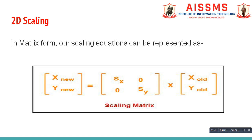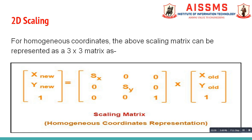In matrix form, our scaling equations can be represented as follows, and it is known as the scaling matrix. For homogeneous coordinates, our scaling matrix can be represented as a 3×3 matrix, and it is known as the homogeneous coordinates representation of the scaling matrix.